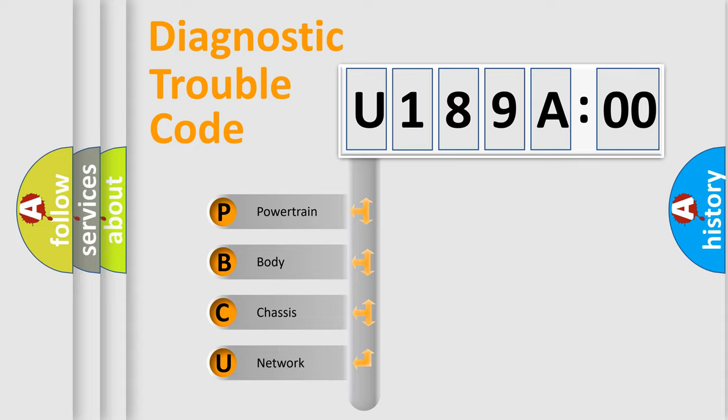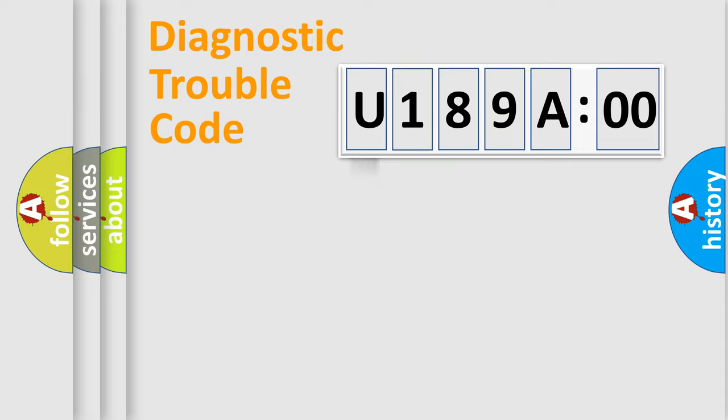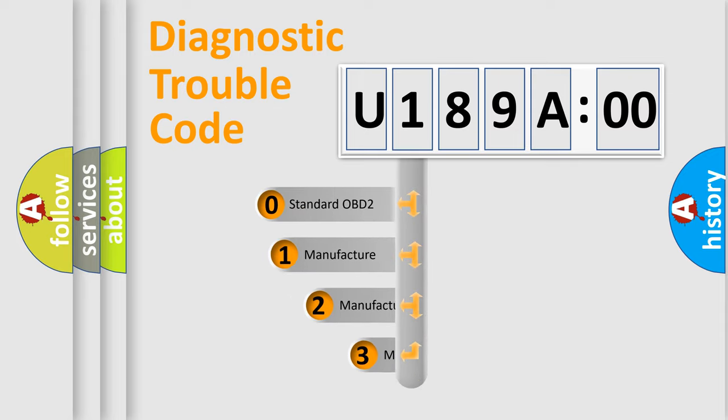We divide the electric system of automobile into four basic units: powertrain, body, chassis, and network. This distribution is defined in the first character code.